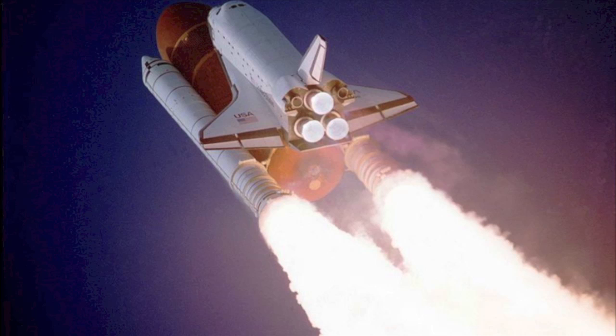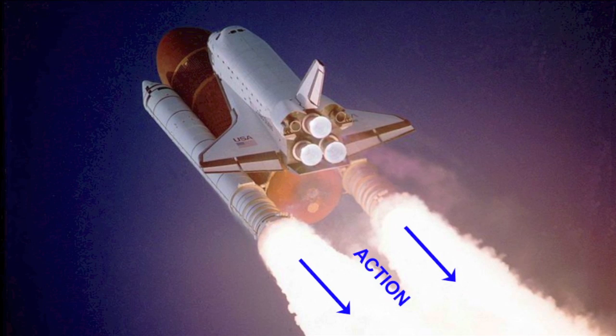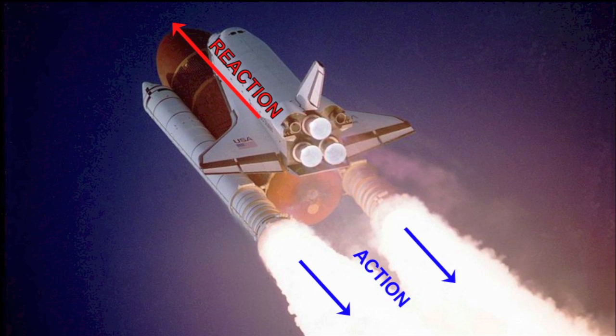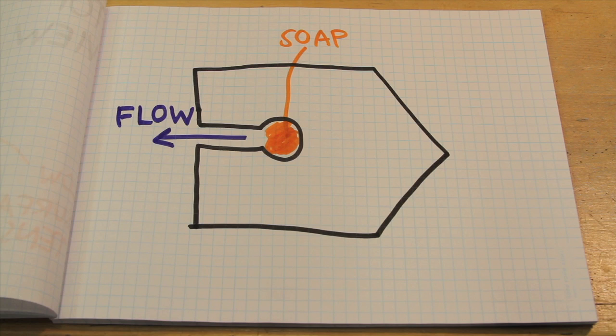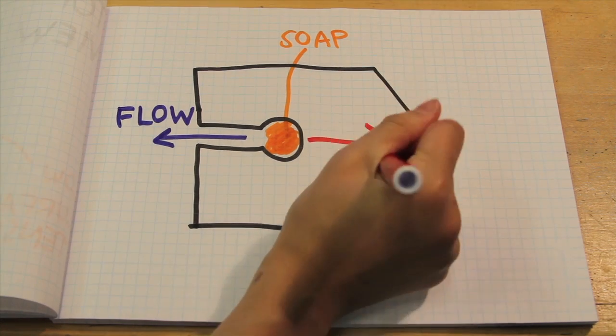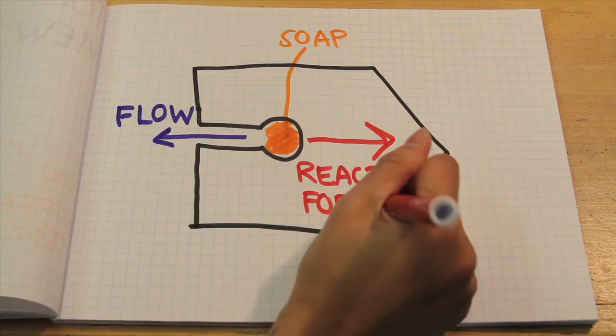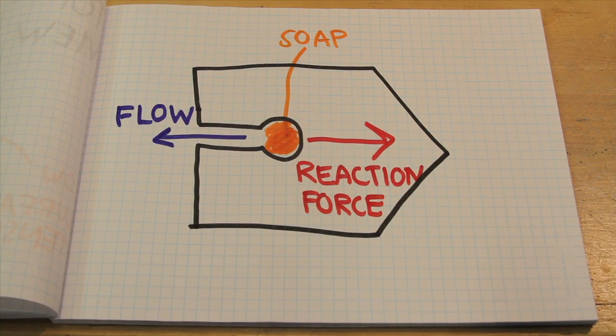This kind of propulsion works because of Newton's third law, which states that every action has an equal and opposite reaction. The action of the fluid coming out of the back of the boat produces a reaction in the opposite direction, propelling the boat forward.